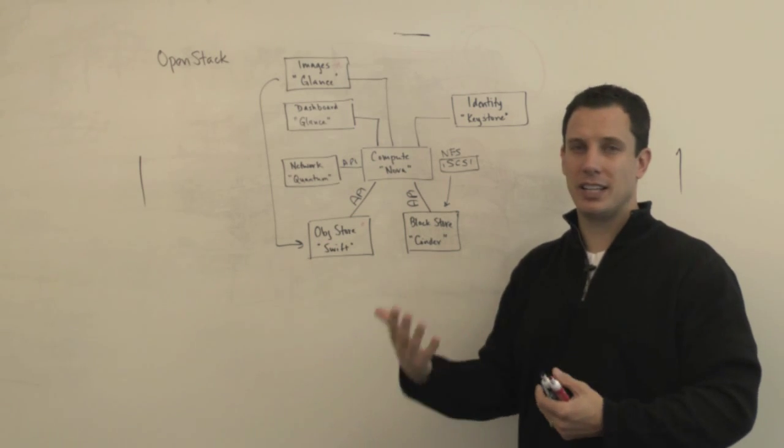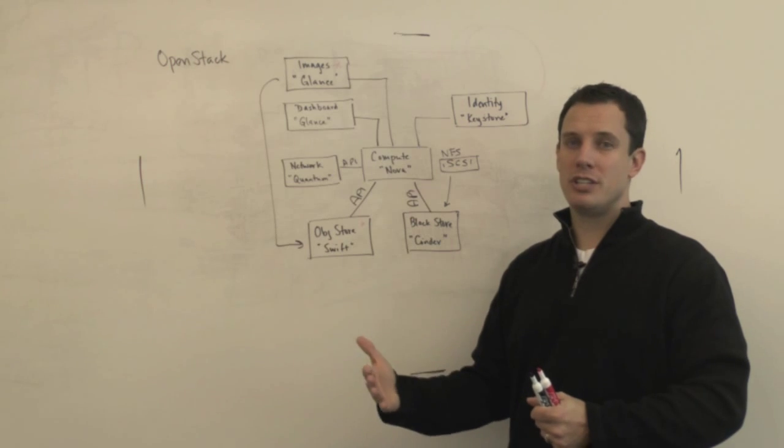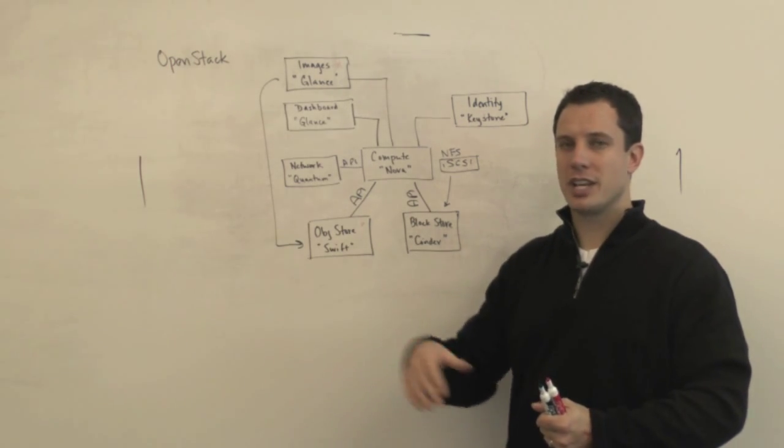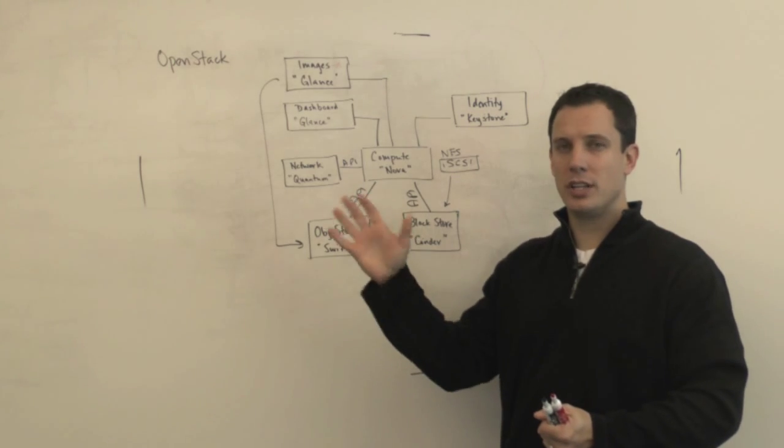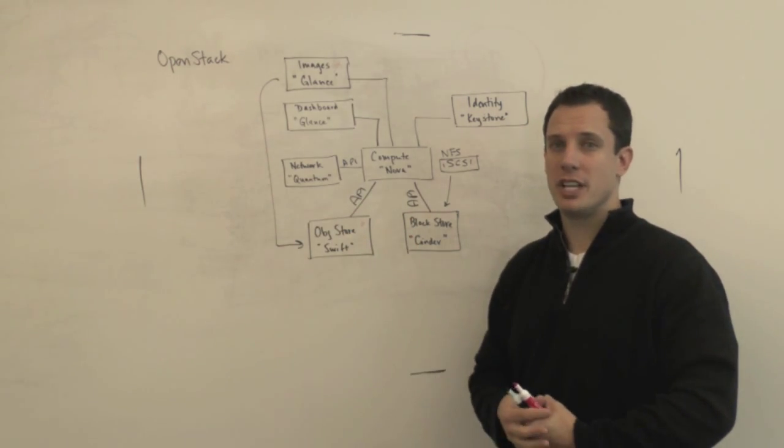And all of these are becoming much more robust, and again, like I talked about, we're into the F release called Folsom, the G release called Grizzly, is scheduled to be out in the Q1, Q2 springtime, late springtime, for 2013.